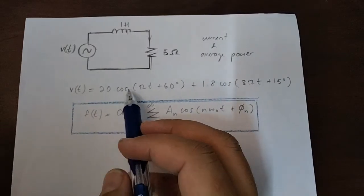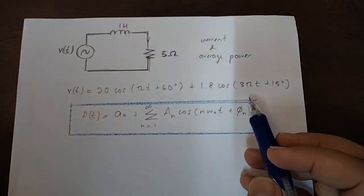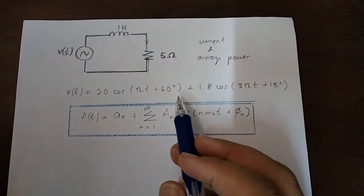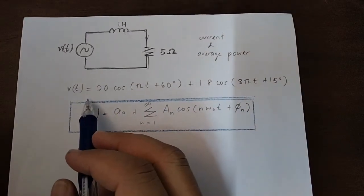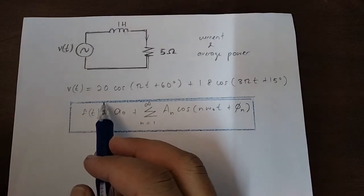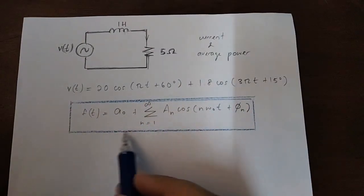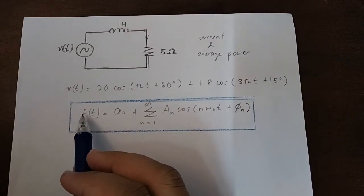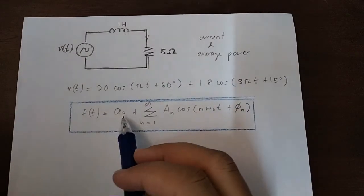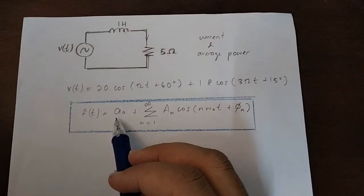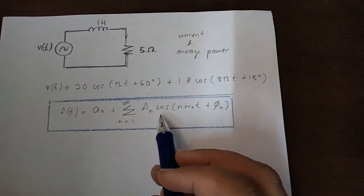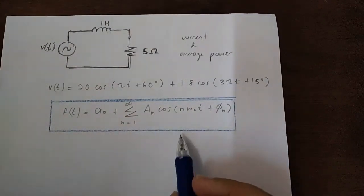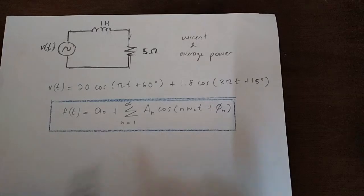V(t) equals 20 cos(πt + 60) plus 1.8 cos(3πt + 15). This is also a representation of Fourier series, in which we can see the general equation of Fourier series in the box. This is the amplitude-phase form of the Fourier series equation, which is F(t) equals A0 — the DC component — plus the summation of An cos(n·ω₀t + φn) from n equals 1 to infinity.